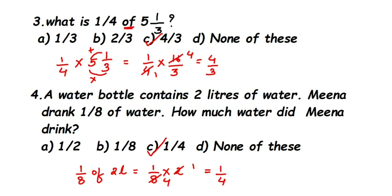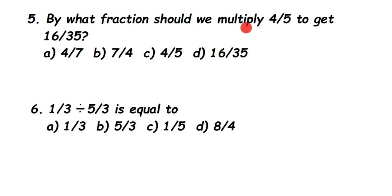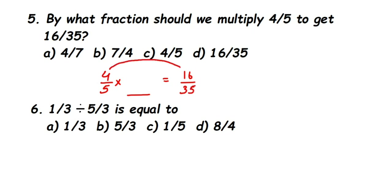Fifth question: by what fraction should we multiply 4/5 to get 16/35? From 4 we should get 16 — so 4×4=16, giving 4 in the numerator. From 5 we should get 35 — so 5×7=35, giving 7 in the denominator. The required fraction is 4/7, which is option A.